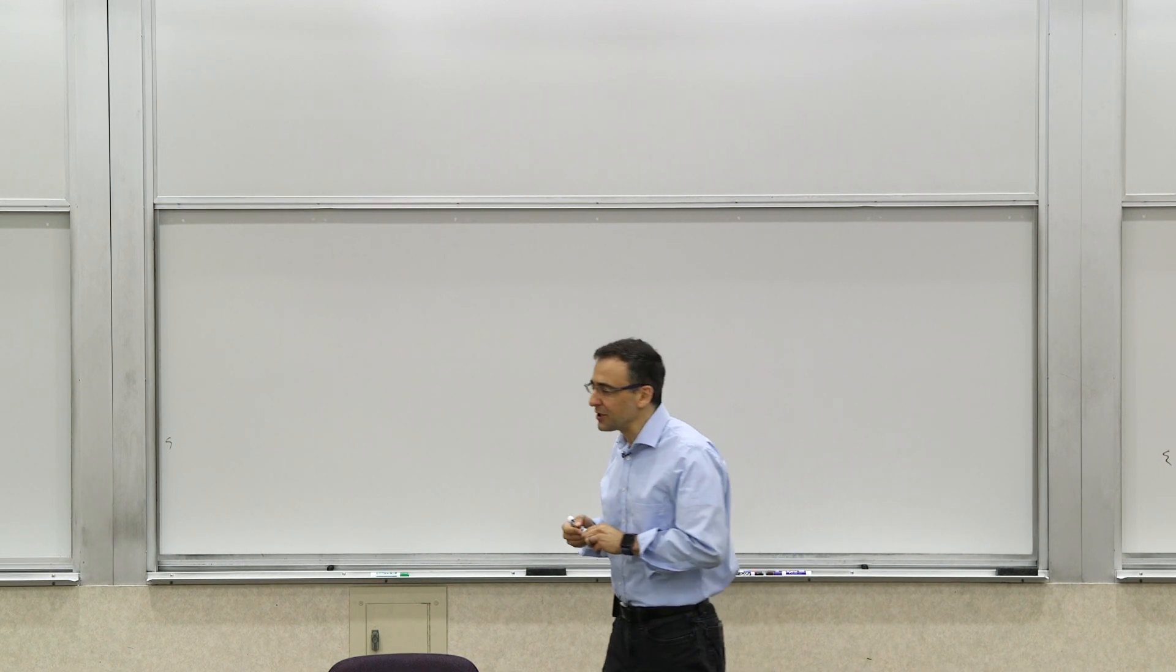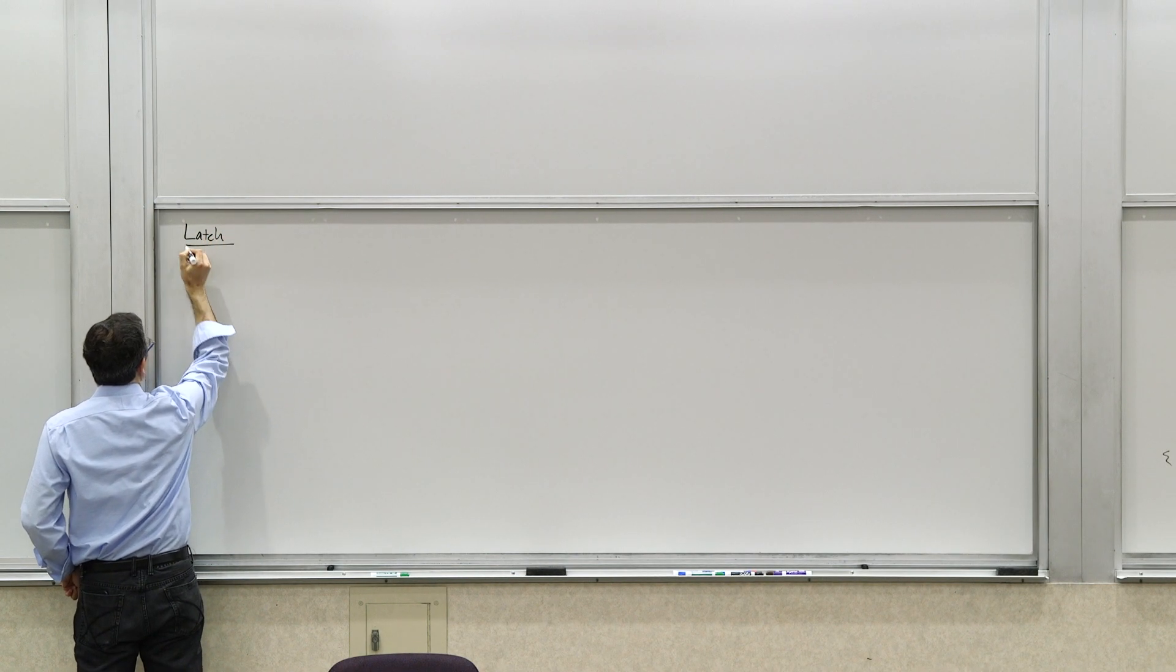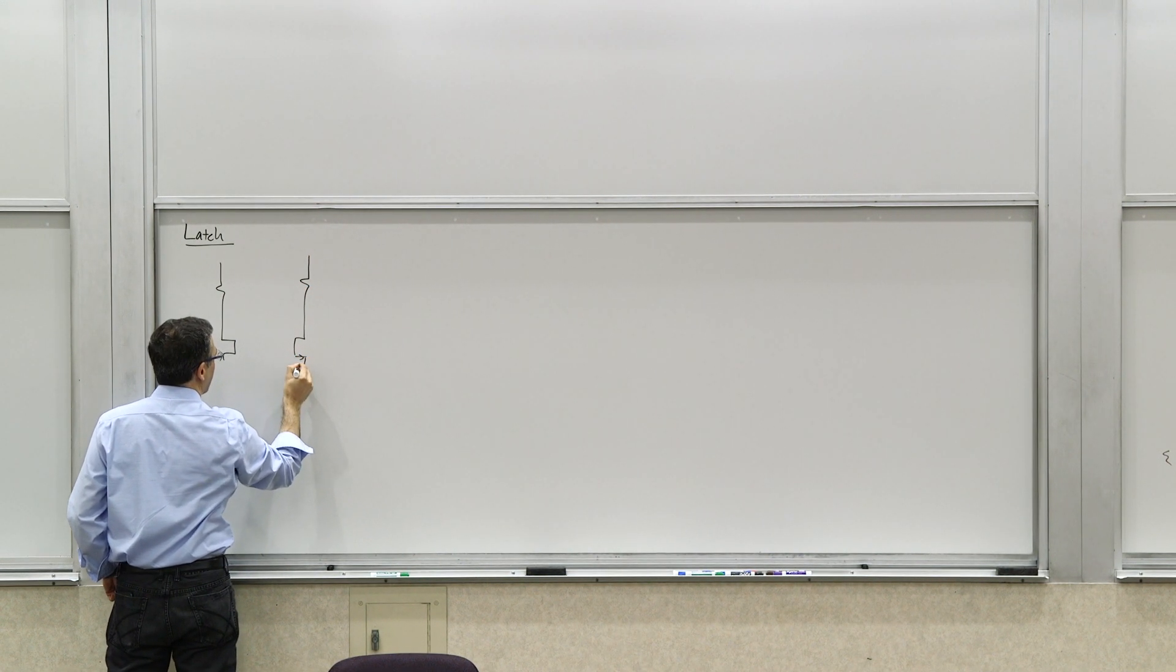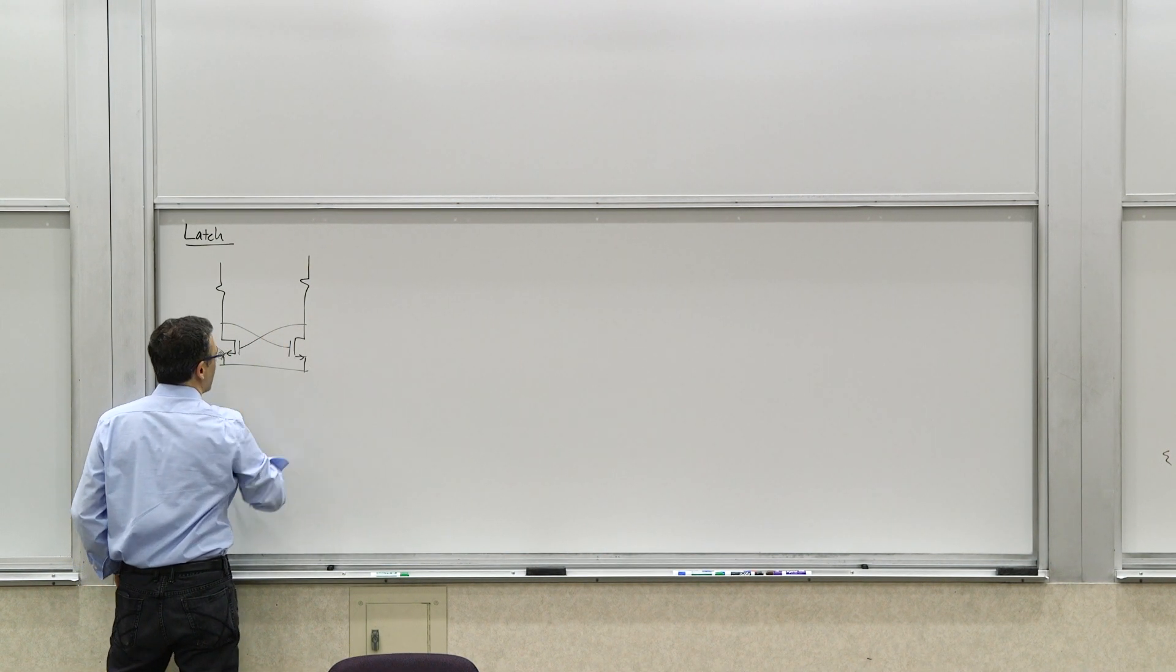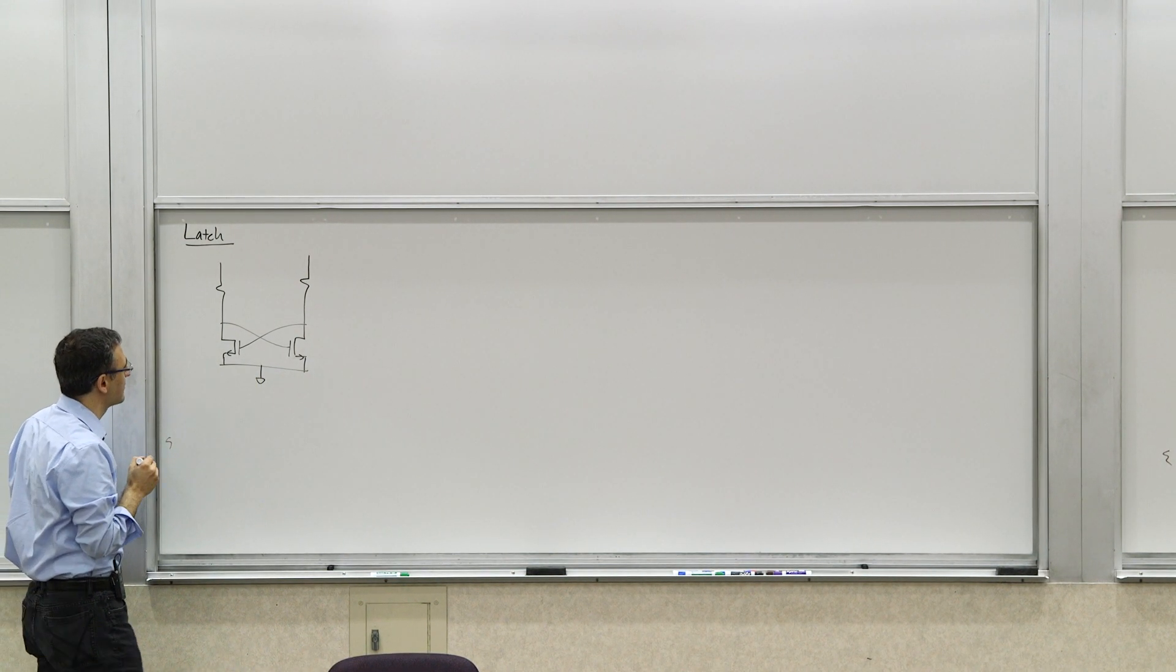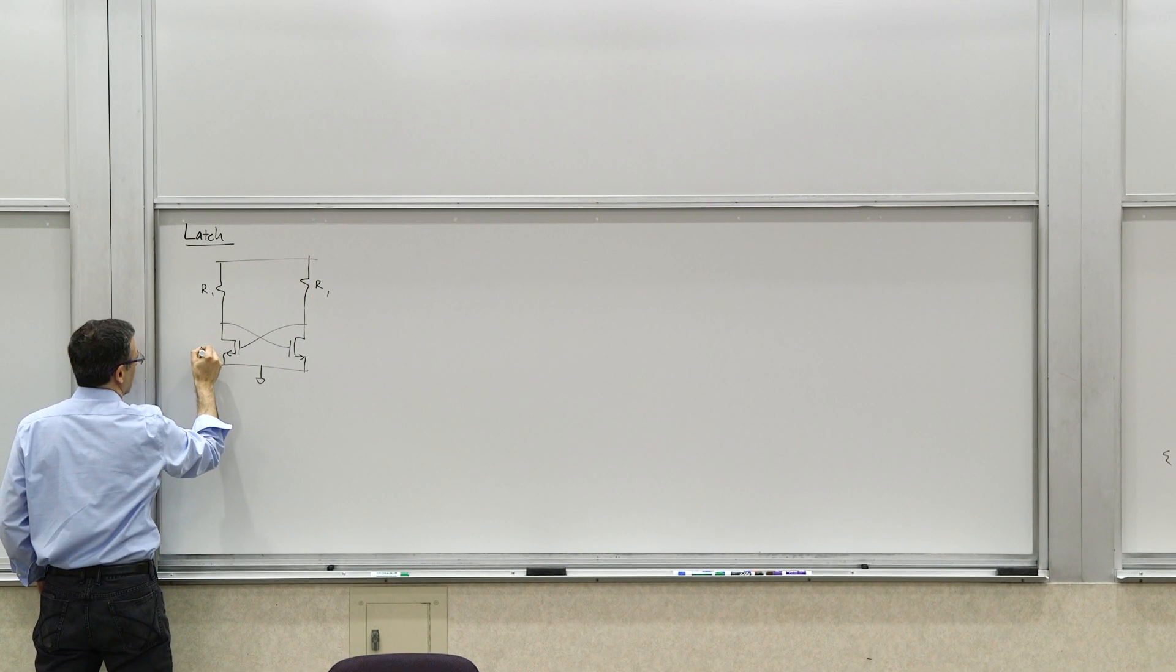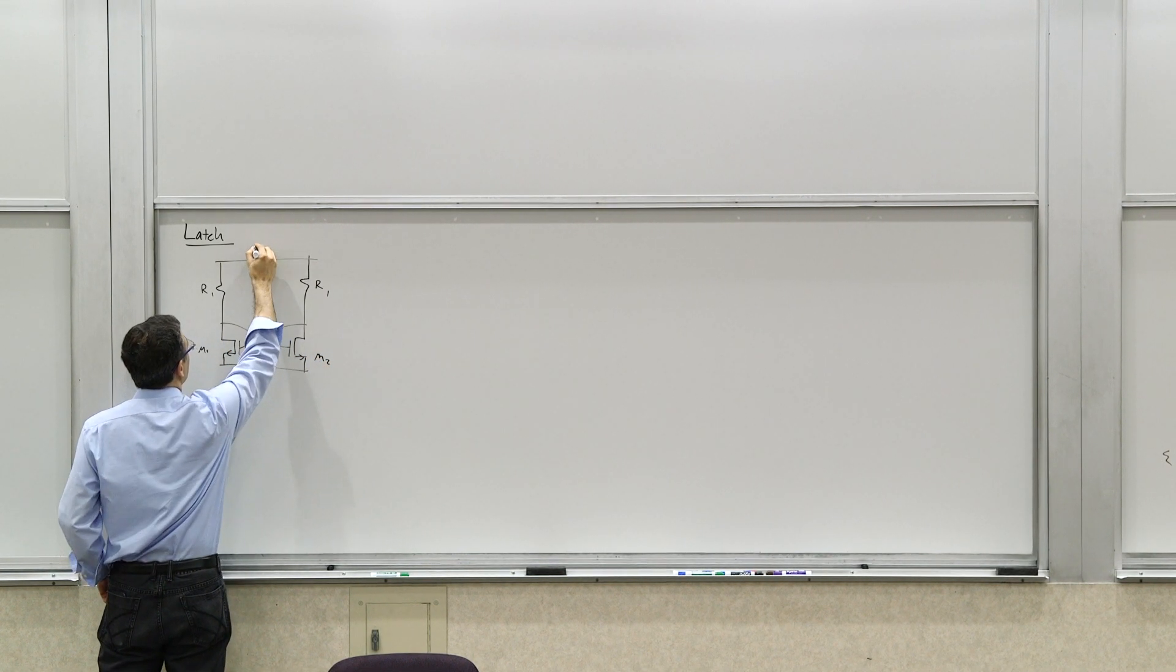So now what is a latch? A simple implementation of a latch is a pair of amplifiers. You can implement it with resistive load or transistors. Let's make it simple with the resistive load, where you have a pair of cross-coupled transistors. And then you have two load resistors, R1. And then you have two transistors, in general it would be M1 and M2. You have some VCC.